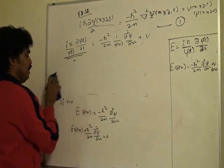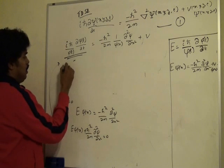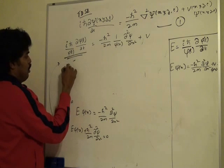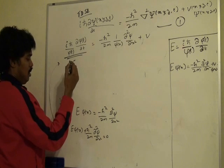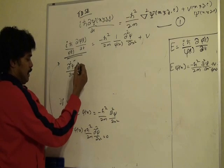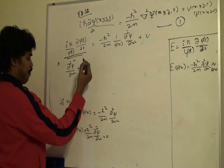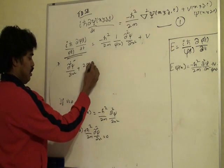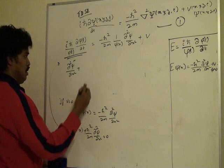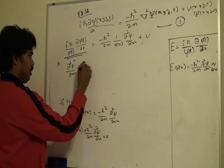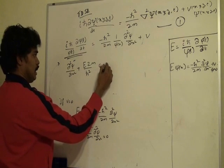From here, d²ψ/dx² plus, so if we multiply this by 2m over h squared, we get 2mE over h squared times ψ(x) equal to 0.